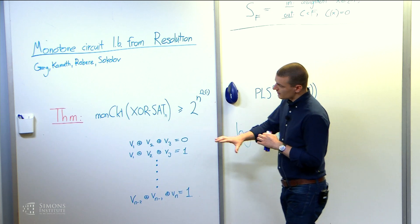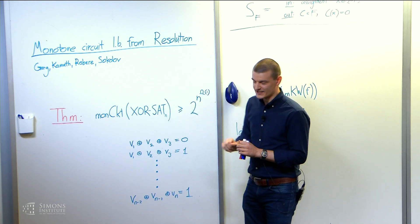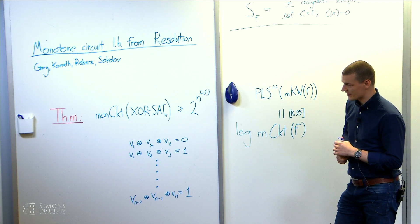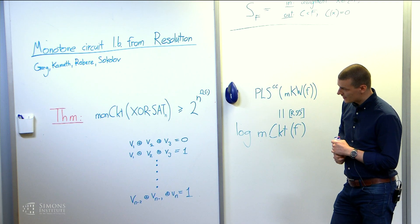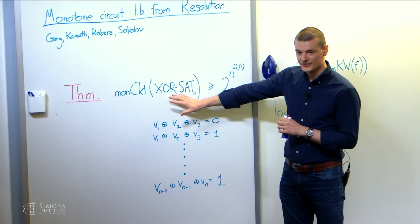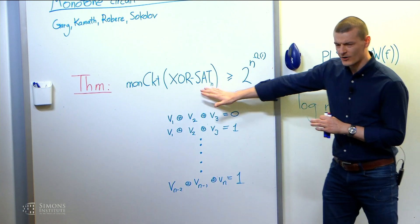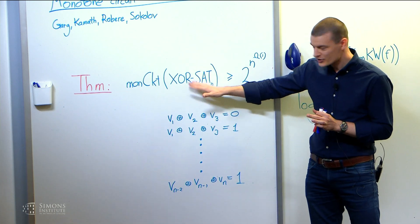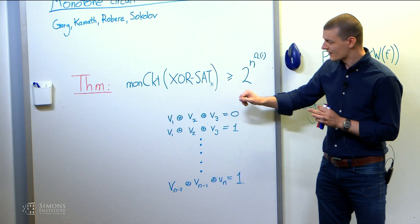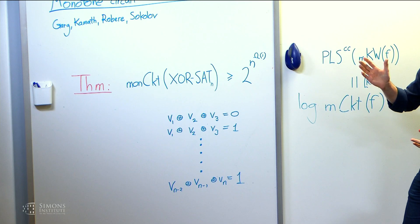So I'll just throw out an application, maybe the cleanest we can derive using this machinery. That's to show an exponential lower bound for some monotone variant of the XORSAT function. So I have to be careful. How do you define a monotone version of XORSAT? And you have to be clever in order to make it a monotone function. Here's the definition.